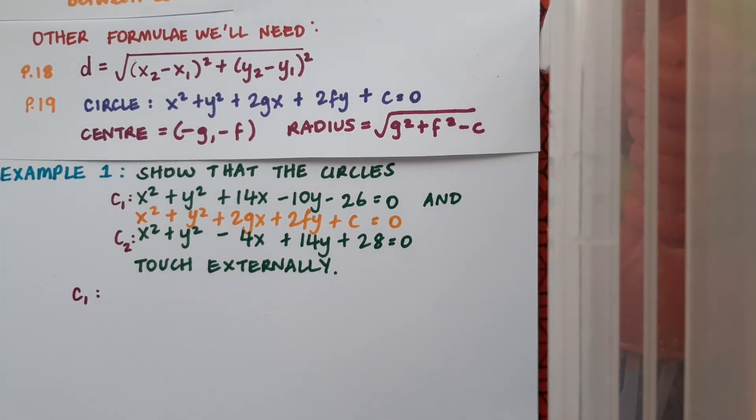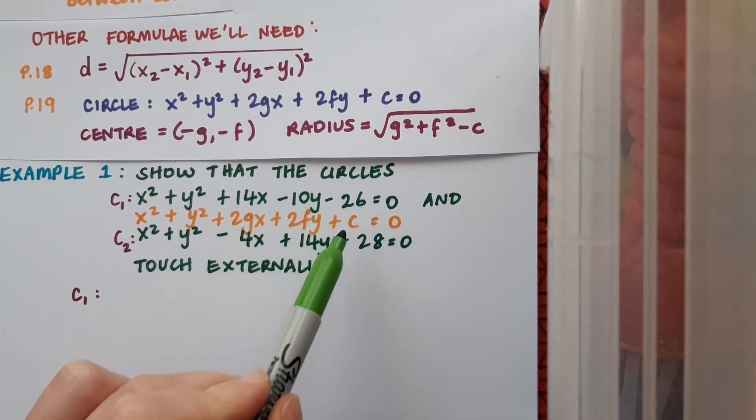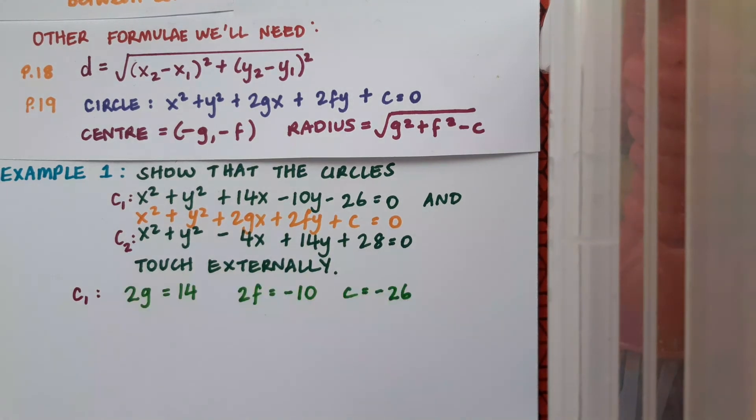So I'm looking at circle 1 first and I'm going to just equate the terms with the g of x, the fy and the c. And from this I can get g, f and c and of course I need these to find centre and radius.